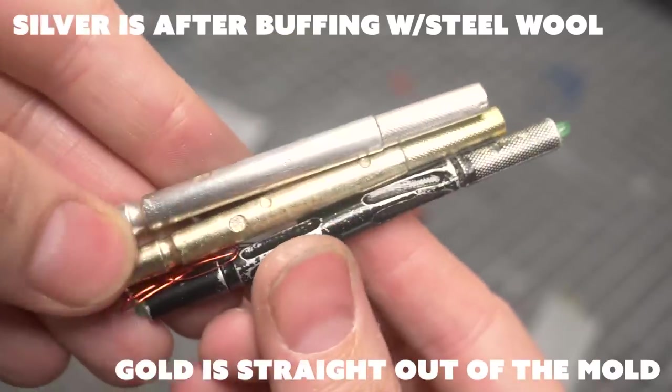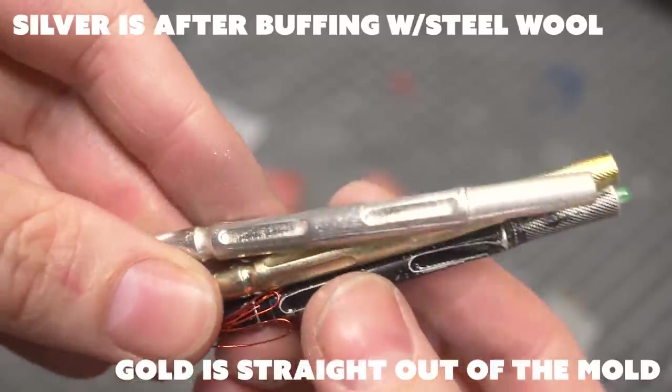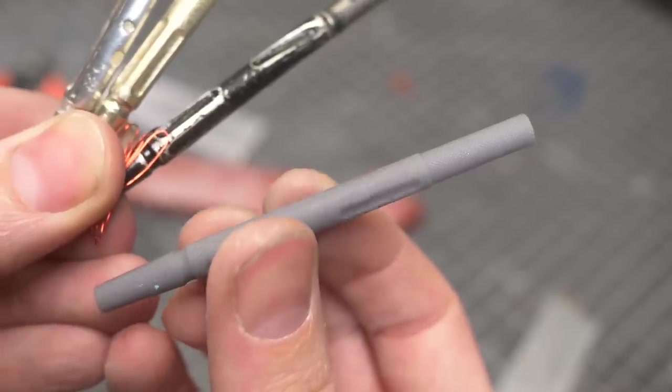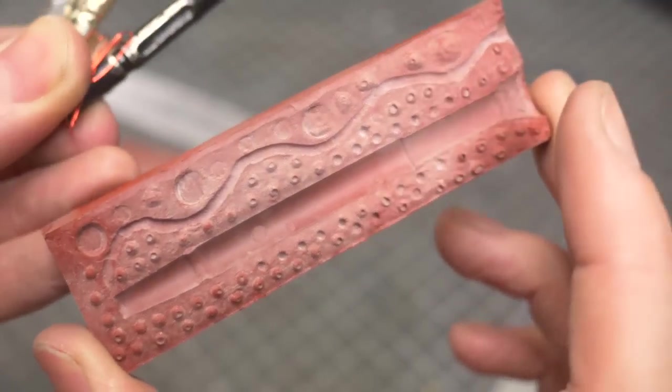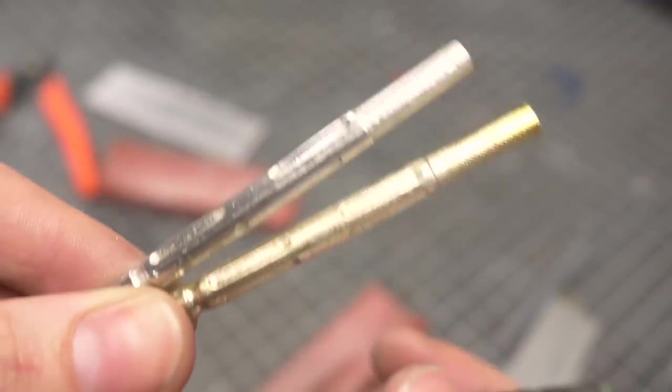But I think I got it pretty darn close. This is the piece that I molded. It was 3D modeled and printed on the Form 2, and then I made this mold here and cast these parts.